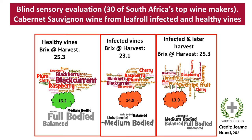Leafroll also affects the quality of wine. Colleagues at Stellenbosch University did an experiment in which they harvested berries from vines that tested negative for type 3 — at that stage the Brix was 25.3. They harvested grapes from leafroll-infected vines at the same time — these had a Brix of 23.1 — and then waited a couple of weeks to collect from further infected vines, waiting for the Brix to reach the same level as the healthy ones. They produced wine from each of these three batches in a highly standardized manner and invited 30 of the country's top winemakers to evaluate the wines blind.